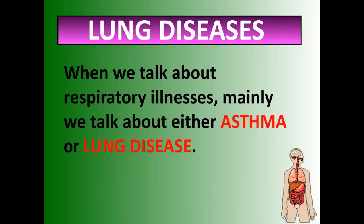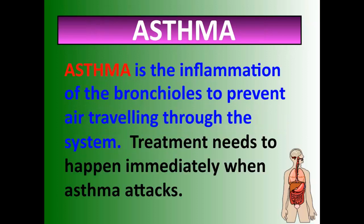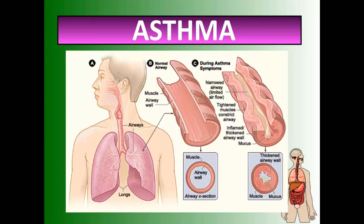Now, lung diseases. Asthma is the inflammation of the bronchioles that prevents air traveling through the system. The bronchioles are the very tiny tubes that fill the lungs, while the bronchi are the two large branches. When those tubes become inflamed, you can't get air in and out — that's called an asthma attack. The airway walls become swollen and can fill with mucus, making it very hard to breathe.